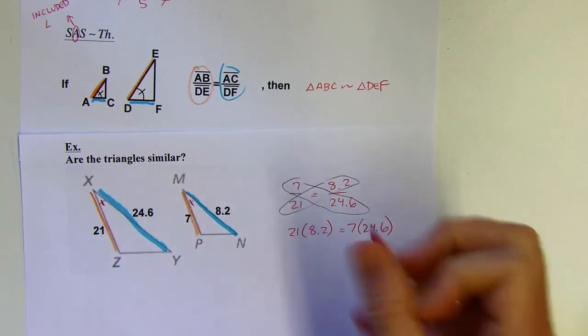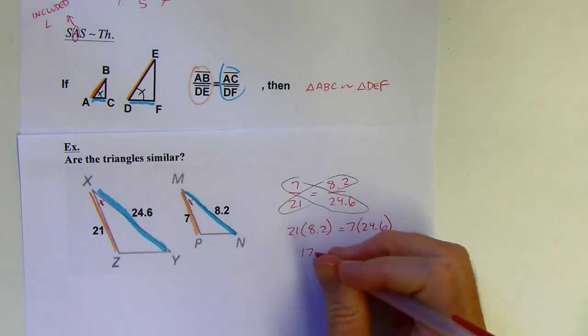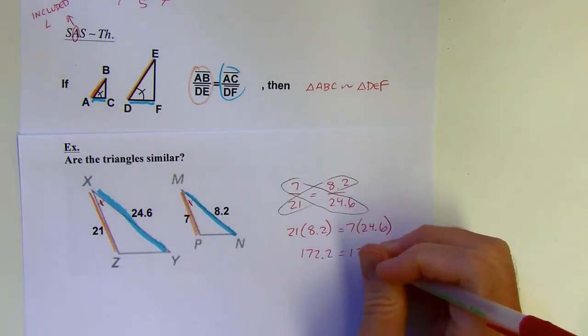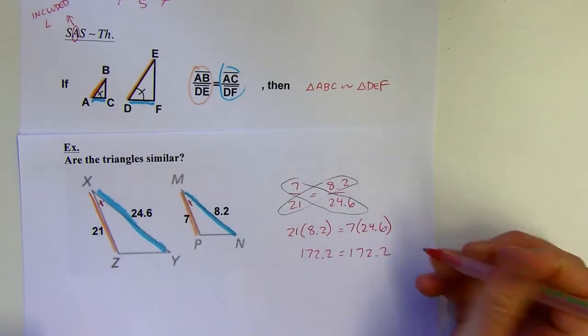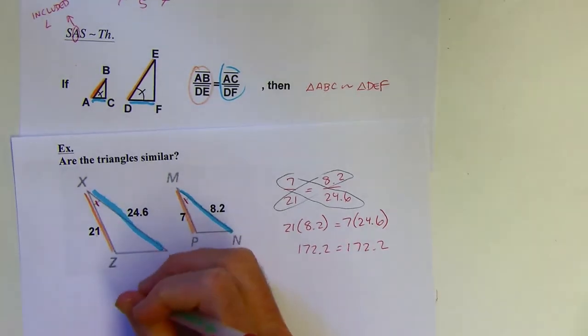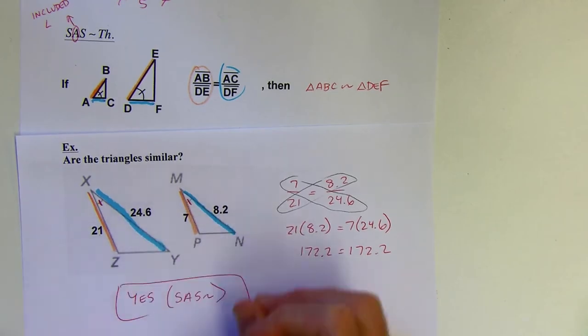So I can check if 21 times 8.2 is equal to 7 times 24.6. Any of those methods is fine. 21 times 8.2 comes out to 172.2. 7 times 24.6. Hey, it worked. They both come out to 172.2. So I know that those are in proportion. So my answer here is yes. These are similar. And I used the SAS Triangle Similarity Theorem.